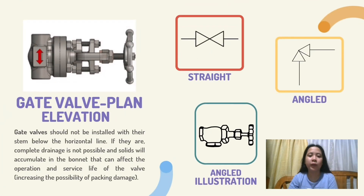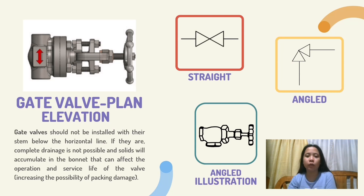Gate valves should not be installed with their stem below the horizontal line. If they are, complete drainage is not possible and solids will accumulate in the bonnet, which can affect the operation and service life of the valve, increasing the possibility of packing damage. Here is the symbol of gate valve elevation: straight, angled, and the angled illustration of gate valve elevation.